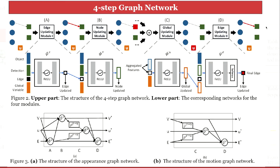Based on the appearance feature and motion feature, we designed the four-step appearance graph network and the two-step motion graph network. Specifically, the motion feature is computed from the displacements between the objects and detections, which means we don't need to update the nodes. Hence, we remove the first edge updating module and the node updating module.